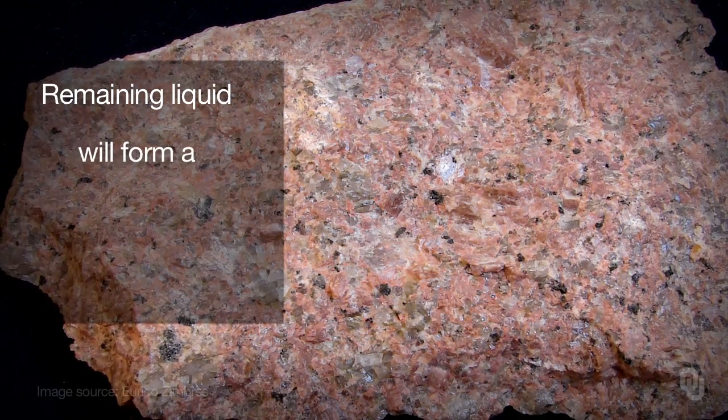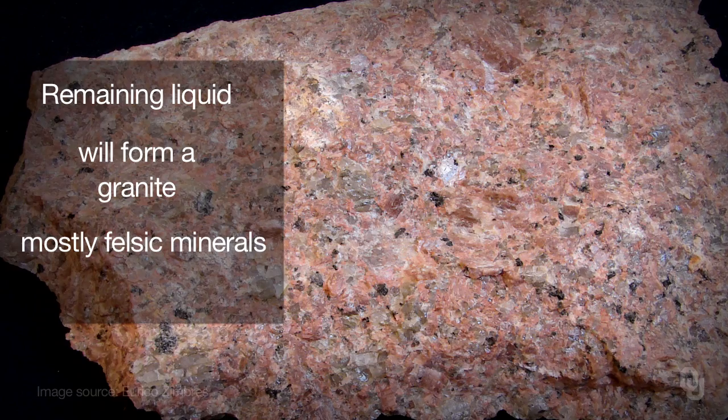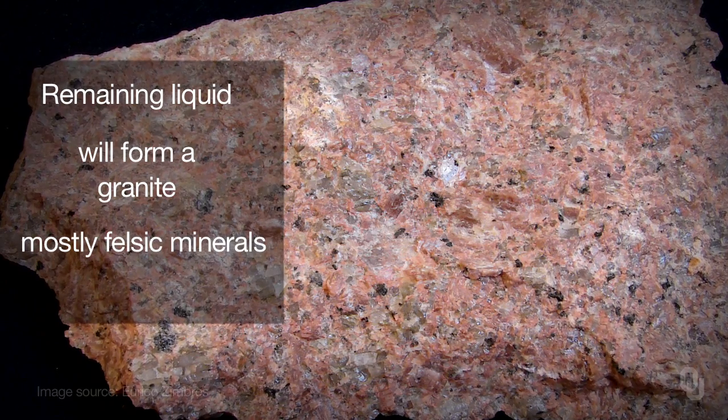However, recall that when we discussed the formation of mafic and felsic minerals, it's the mafic minerals that form first. Assume that mafic minerals form first from that magma and they settle out — they will produce perhaps a gabbro. But the remaining liquid will form a granite, which is composed mostly of felsic minerals because those minerals form at lower temperatures.